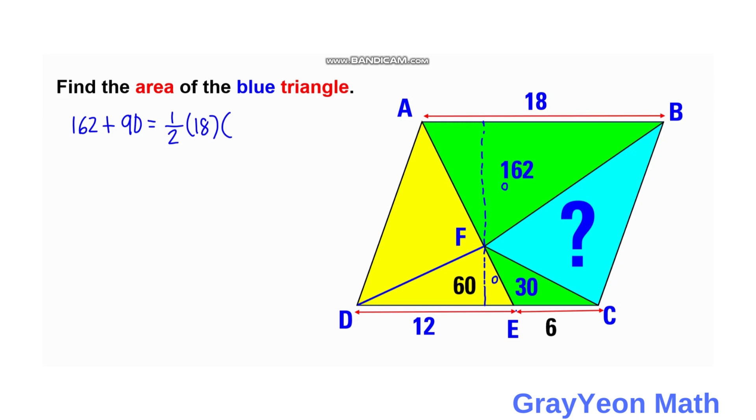So x... this will become 252. It's equal to one half times 18x, and we just cross multiply, so x is equal to 252 times 2 divided by 18, so x is equal to 28.